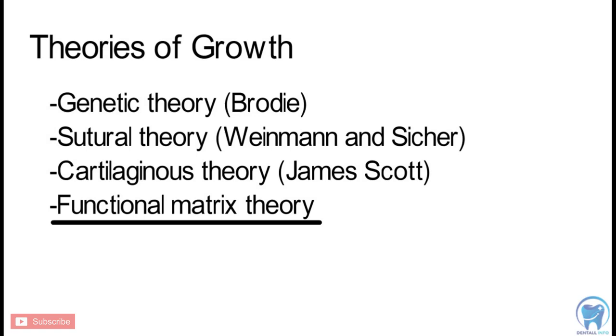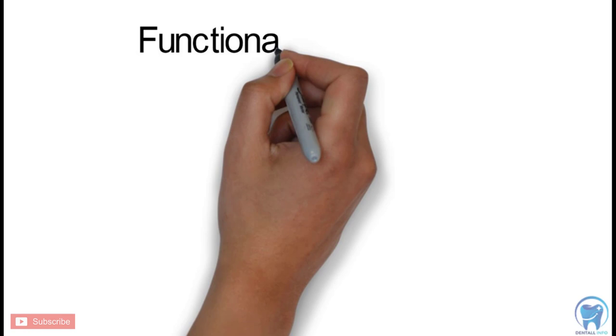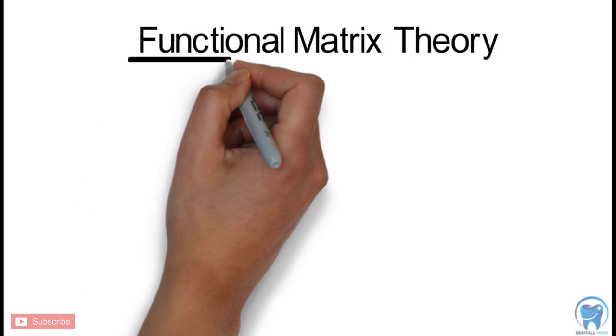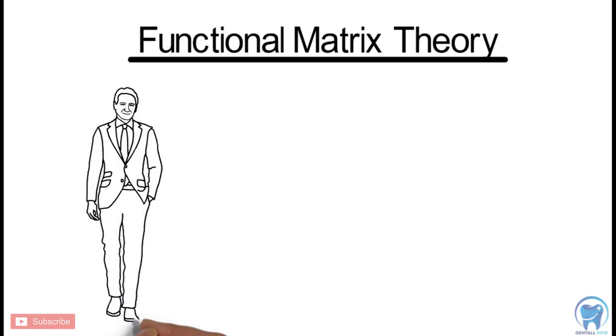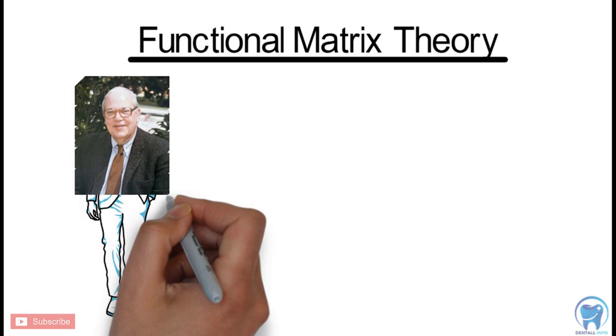The Functional Matrix Concept of Melvin Moss revitalized the studies of growth and development at the time when the sutural growth theory of Sitcher and the cartilaginous growth theory of Scott was severely criticized for their inadequacy. Moss introduced the doctrine of Functional Matrix complementary to the original concept of Functional Cranial Component by Van der Klaus.